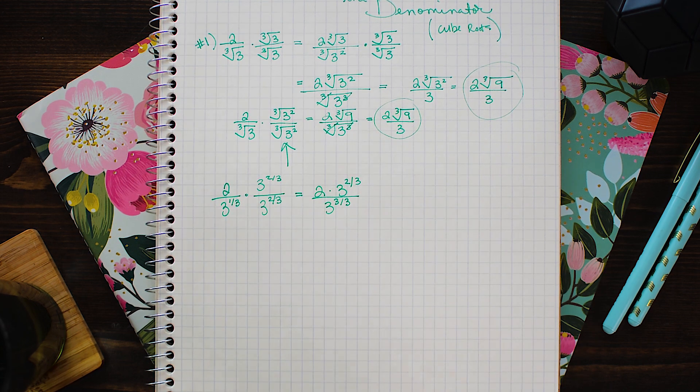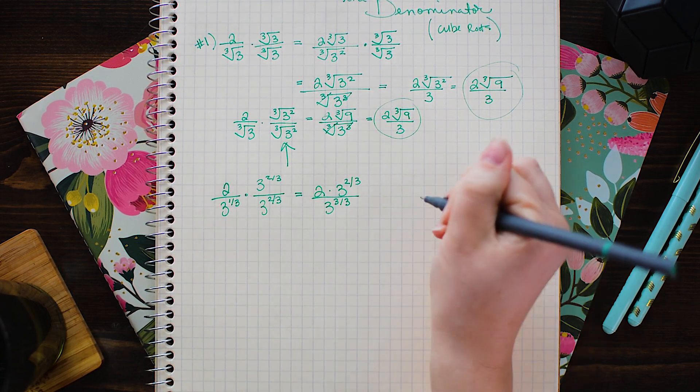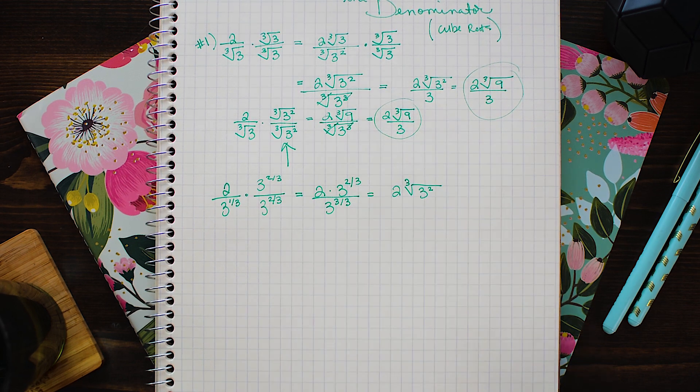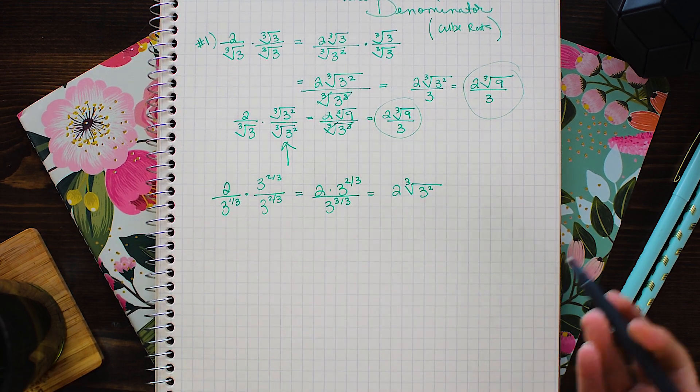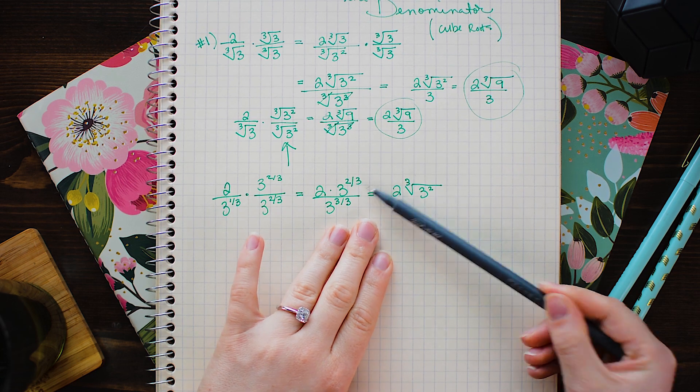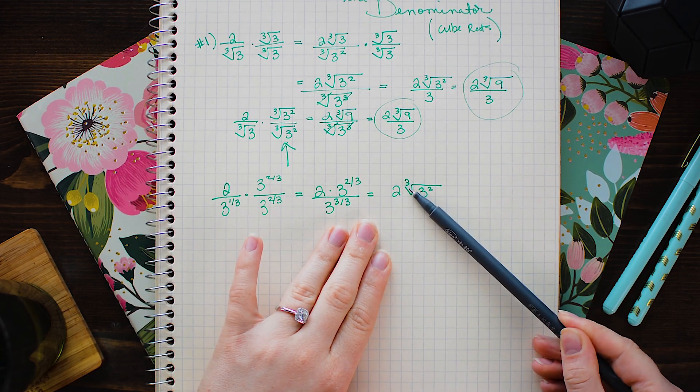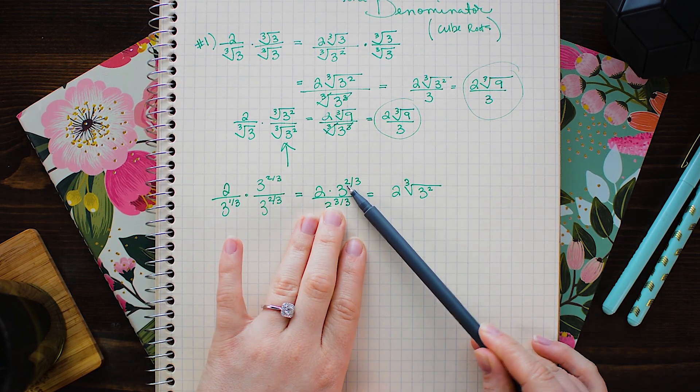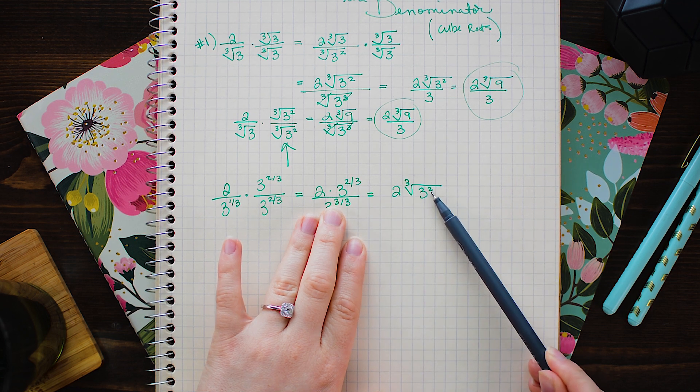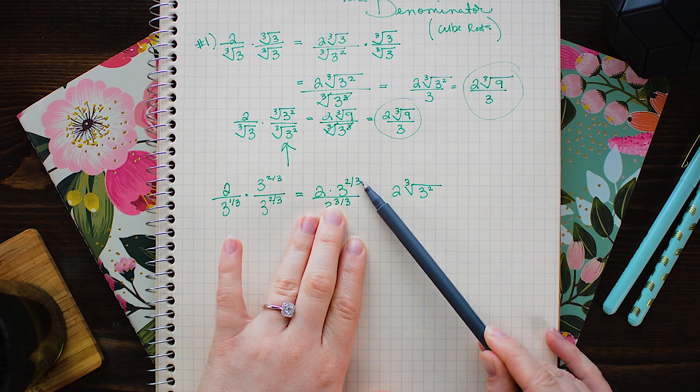And here I have 2 times 3 to the 2 thirds over 3 to the 3 thirds. And lastly I'm just going to reduce. So here you'll notice that whatever number is in the denominator is the index of our root.